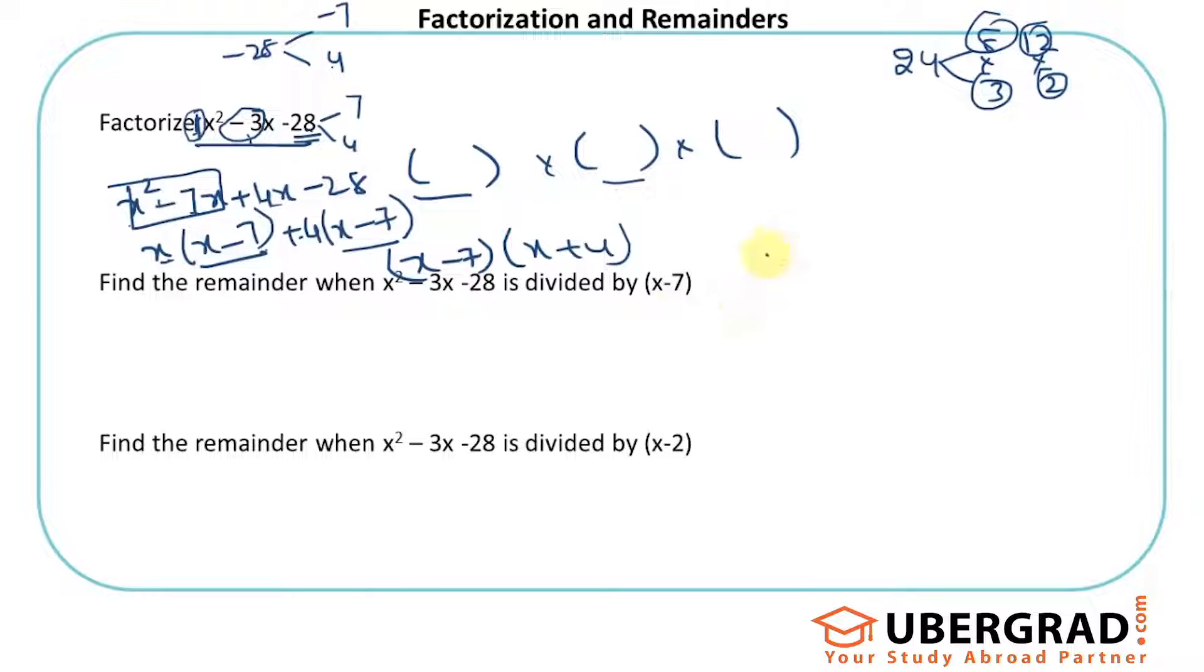I can do this similar to how we divide. Like if 24 is divided by 7, we do 7 × 3 = 21, so 3 is the remainder. Similarly, I'll divide with x first. x × x = x², x × (-7) = -7x. I'll get plus 7x, so -3x becomes 4x.